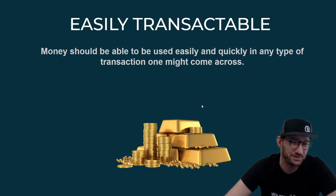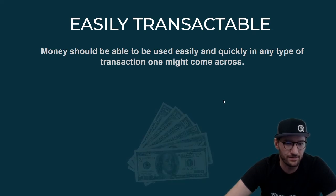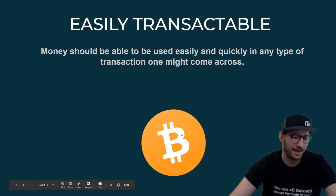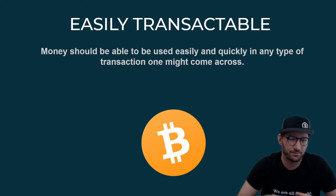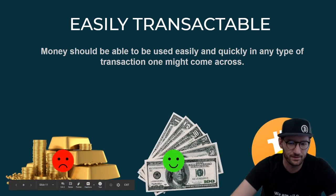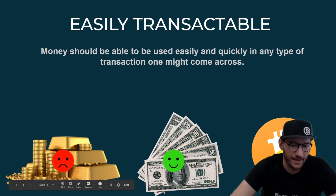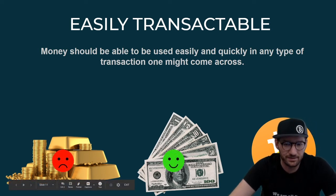Easily transactable — gold, not so much easily transactable. Maybe back in the day it was a lot easier, but now it's not. Cash, very easily transactable — we learned this in elementary school. Bitcoin currently is not. Here's the deal with Bitcoin — it is so easy to use if you understand how everything works. The problem is if you do the wrong thing, you could accidentally lose all of your money. I give it a yellow smiley guy because it can be easy, but it just needs improvement. Until an AOL comes around for Bitcoin or a Netscape or a Google that makes it really easy and gains mass adoption, then yeah.